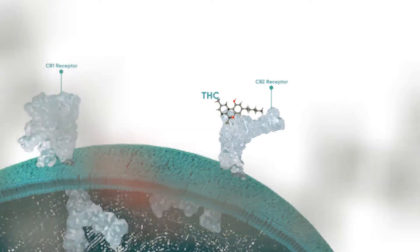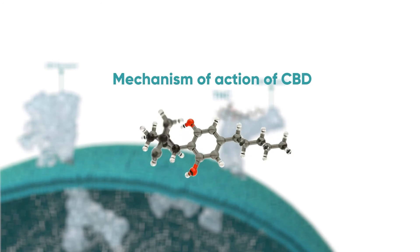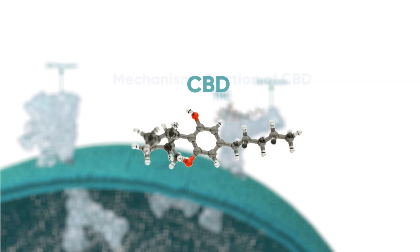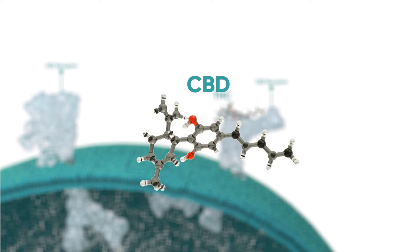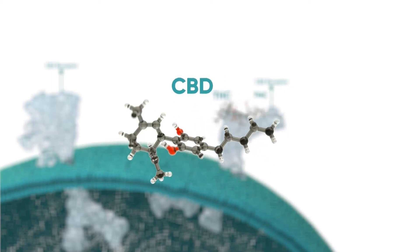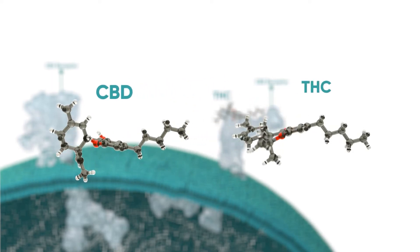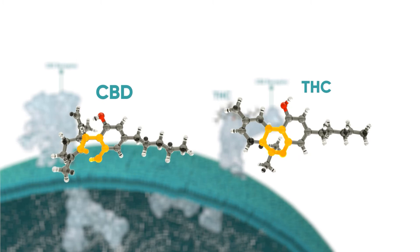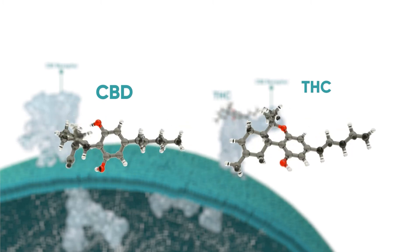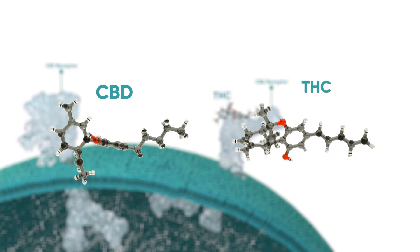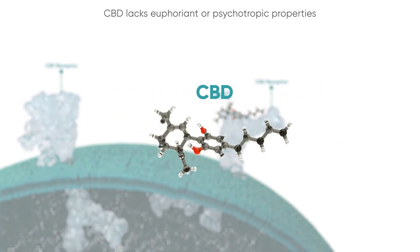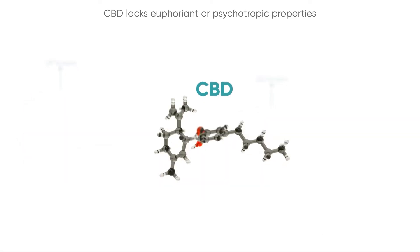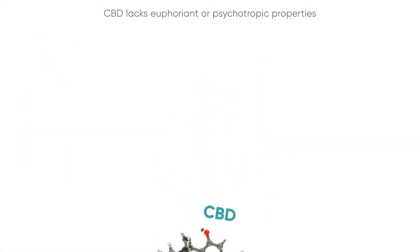What exactly is the mechanism of action of cannabidiol? CBD may appear structurally like another phytocannabinoid, THC, at first glance, except for the broken ring, which enables CBD to bend in three dimensions while THC remains flat.